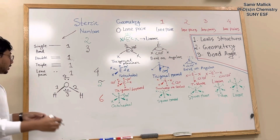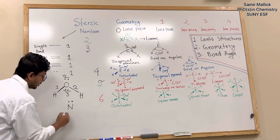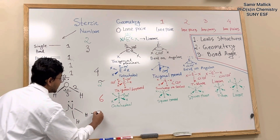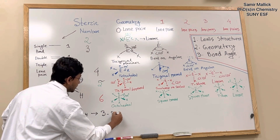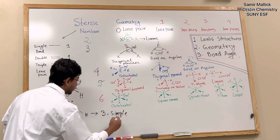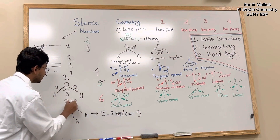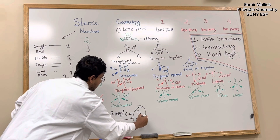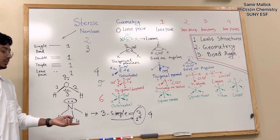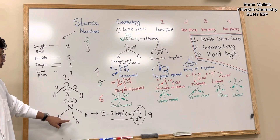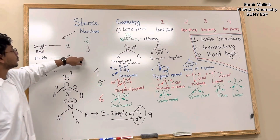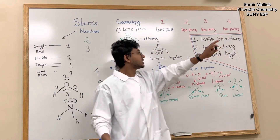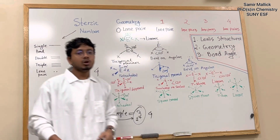Any compound like ammonia, you can see that structure. Ammonia has three single bonds, which count as three, and one lone pair, which counts as one. So ammonia also has a steric number of four. When we count four or any steric number, we can go through the Lewis structure, geometry, and bond angle of any compound.